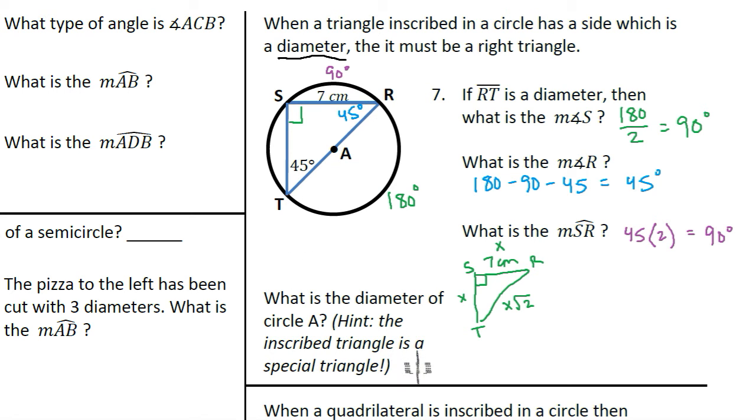There's actually a few ways that we could figure this out. One, I know this is a 45-45-90 triangle, and that means if SR is seven centimeters, then I know that ST is seven centimeters.